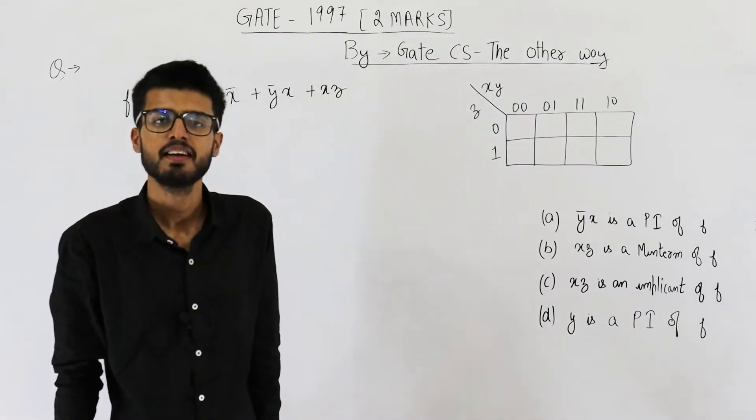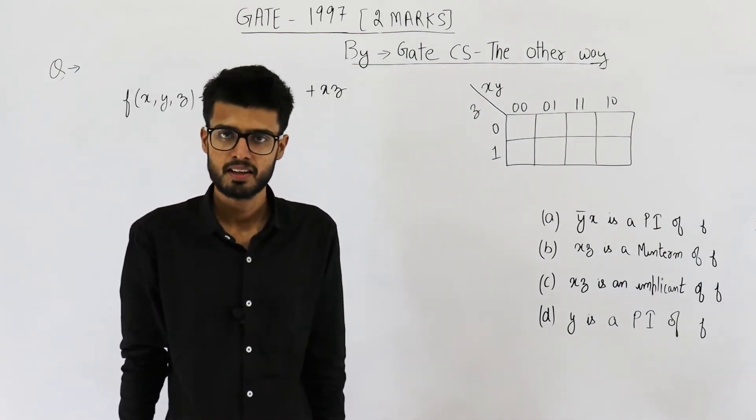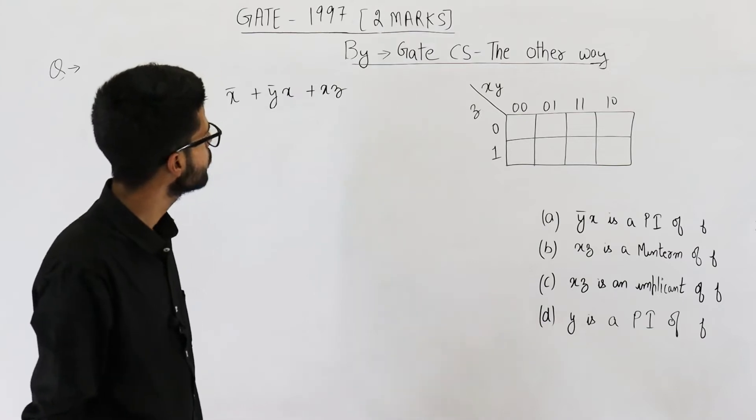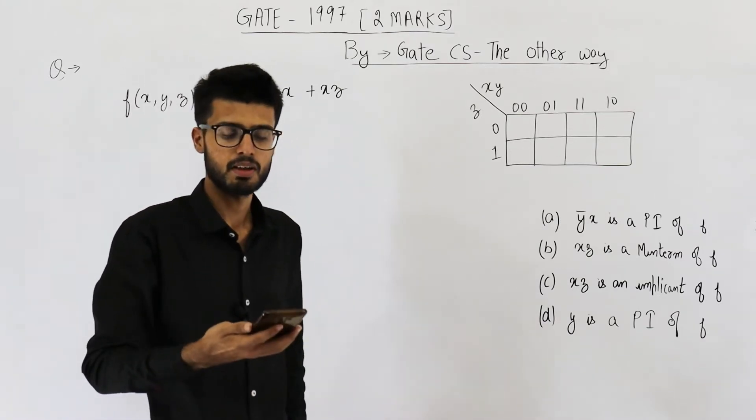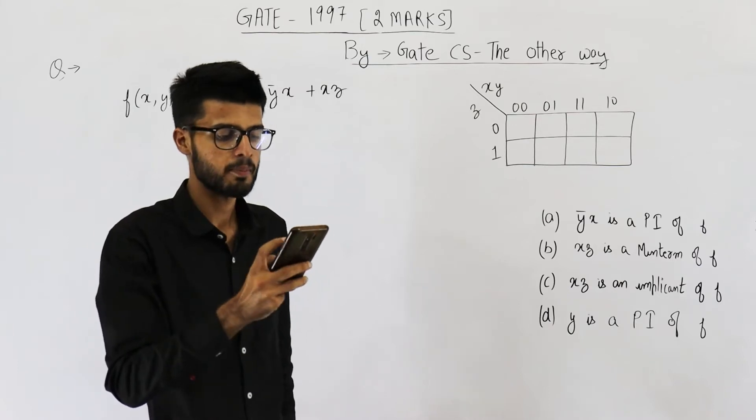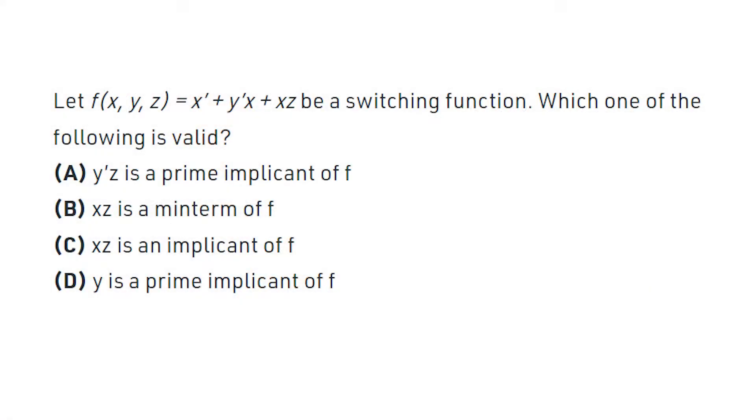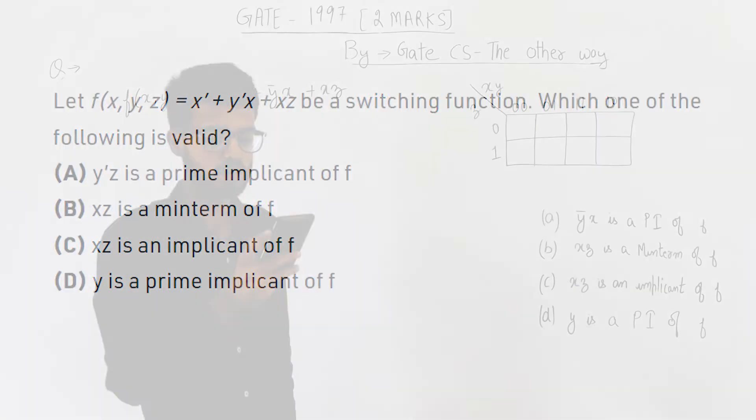Hello students, welcome back. This question is from 1997 exam. It's a 2 marks question and is a really interesting one. Let me read out the statement, then we are going to solve it. Let f of x, y, z be equal to x bar plus y bar, x bar plus y bar x plus xz be a switching function. Which of the following is valid?